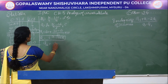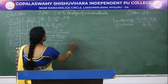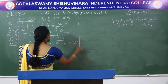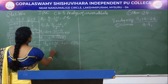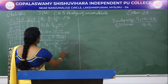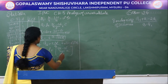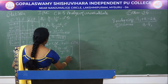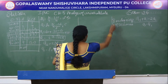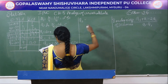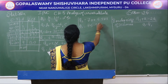Next, find Q2. Q2 is 2 into N by 4, which is 2 into 30 = 60th observation. The 60th observation falls in the LCF of 79, so we block that interval. Q2 equals L plus (2N/4 minus CF) divided by F, into C. Here L is 70, 2N/4 is 60, CF is 36, F is 43, and C is 10. After simplification, Q2 equals 70 plus 5.5813, so Q2 is 75.5813.